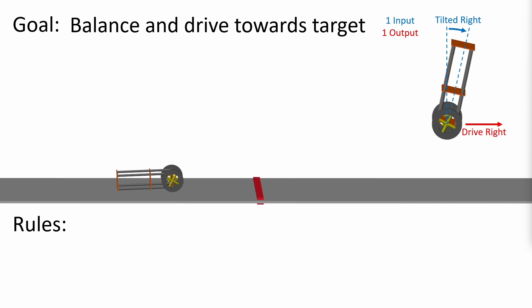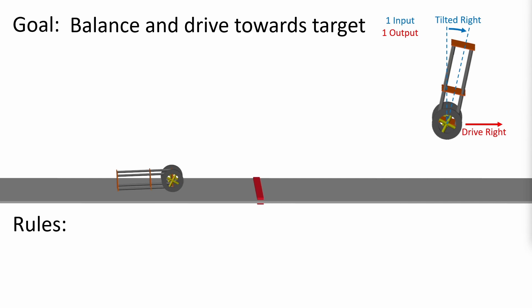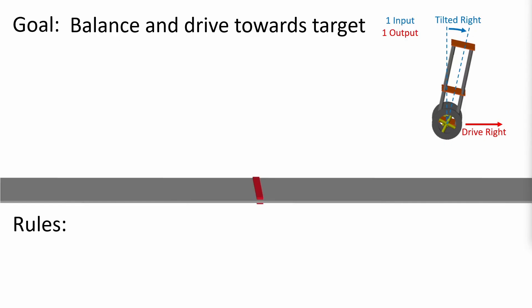I want you to pause the video and think about the simplest response the Segway should have to stop itself from tipping over. Okay, hopefully most of you realize that if the Segway is tilted to the right, it should drive to the right to stay balanced. And similar story when tilted to the left. I'm going to collect our inference rules at the bottom of the screen for reference.